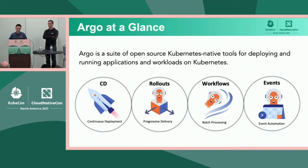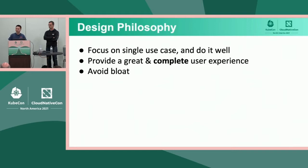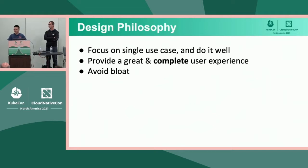You might be wondering how we ended up with four loosely coupled projects. It comes down to design philosophies we share. We believe each project should stay focused on a specific use case and solve that use case very well. Argo CD is all about delivering manifests from a Git repo to Kubernetes clusters. A few years back we had the need for blue-green and canary deployments, but adding that to Argo CD felt out of scope and too opinionated, so we developed it as a separate project — that became Argo Rollouts.